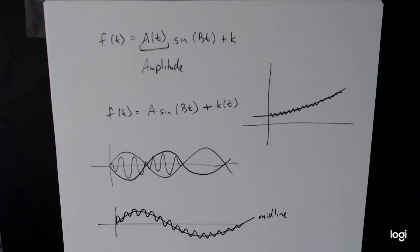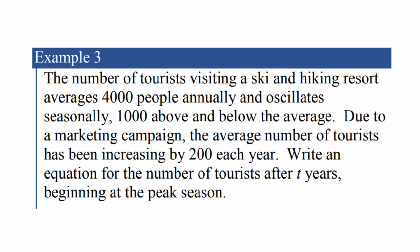Let's look at example three. The number of tourists visiting a ski and hiking resort averages 4000 people annually and oscillates seasonally 1000 above and below the average. Due to a marketing campaign, the average number of tourists has been increasing by 200 each year. Write an equation for the number of tourists after t years beginning at the peak season. Take a moment and try to see if you can figure out how to create a model for this situation.